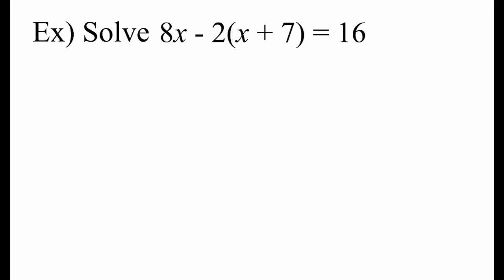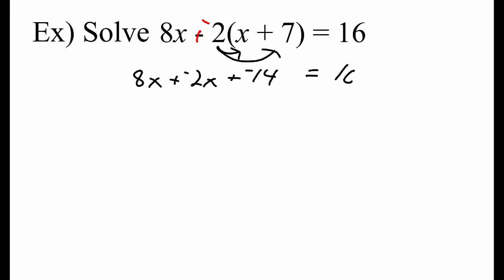Let's give it a try. Before we distribute the 2, let's remind ourselves that we're actually distributing a negative 2. I'm going to change that to plus negative 2. So we have 8x plus negative 2x plus negative 14. First we got rid of parentheses by distributing. Now we're going to combine like terms on the same side of the equal sign.